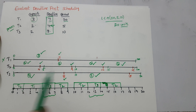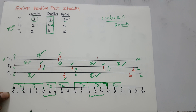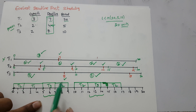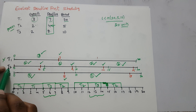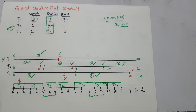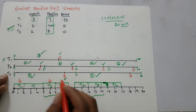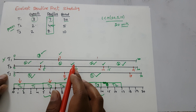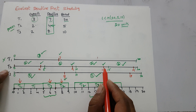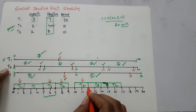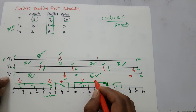Verifying each deadline: from zero to two t2 is completed before deadline four — achieved. From two to five, t1 is executed and completed before deadline seven — achieved. From five to seven, t3 executes two units and completes before deadline eight — achieved at seven. t2 completes before nine — true. t2 completes before fourteen — true. t3 completes before eighteen — true. t2 completes before nineteen — also achieved.